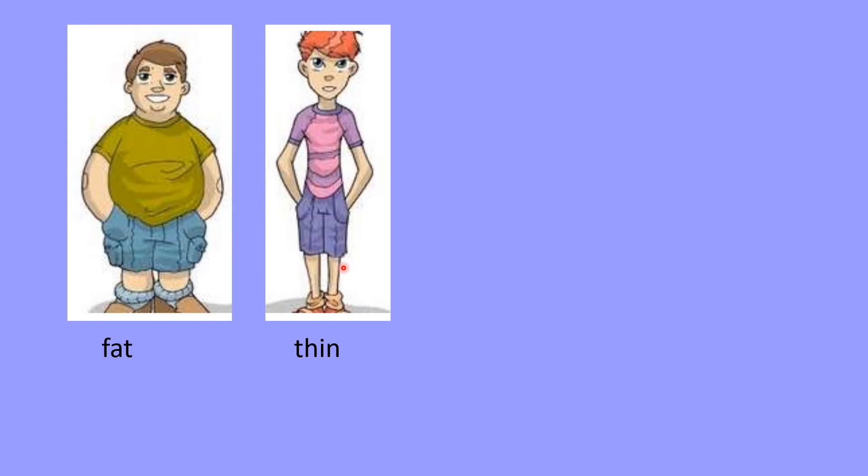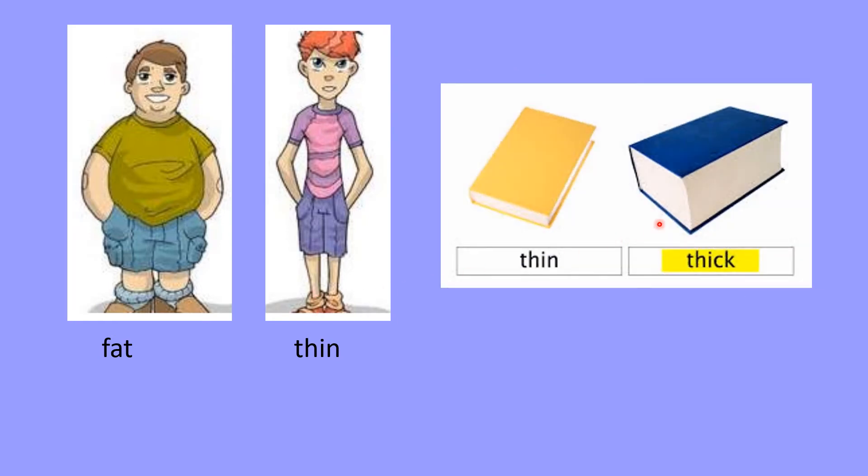Now children, you must make your own sentence looking at the picture. This boy is fat. This boy is thin. Now, you can also use it for a book, but the word changes a little bit, children. This book is thin and this book is thick. We don't say fat. We say thick. Thick means it is bigger than the thin book. It is fatter than the thin book. But for a book, you say thin and thick. Even a rope, you can say a thin rope, a thick rope.